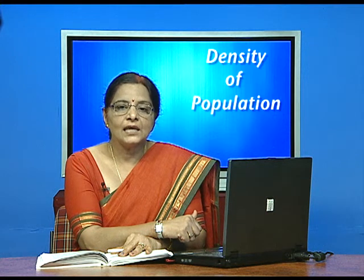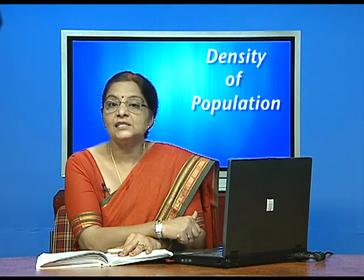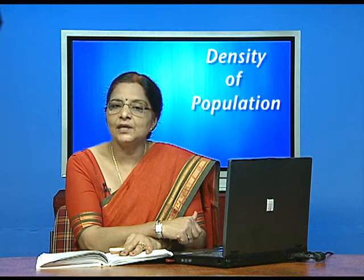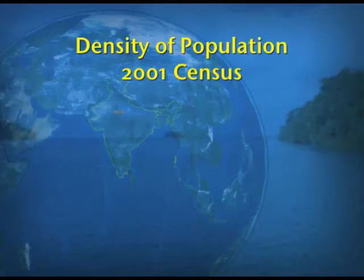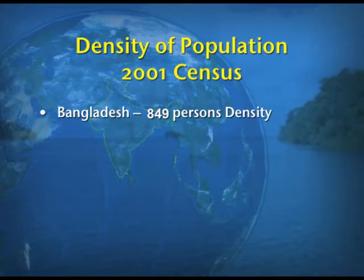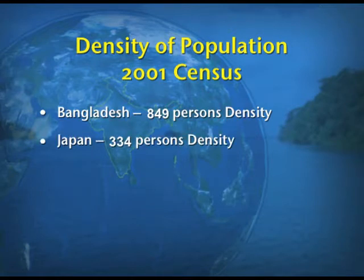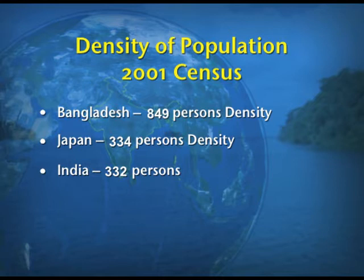India stood third in the world in density of population according to the 2001 census. In 2001, Bangladesh had a density of 849 persons, Japan had 334, and India stood third with 332 persons per square kilometer. But after 10 years, India's population density has risen, and India is now second in the world, following Bangladesh, with a density of 382 persons per square kilometer.